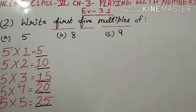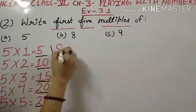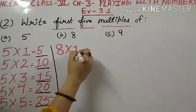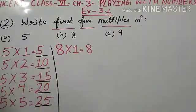Now, B part, B part is 8. Now we have to write multiples of 8. First 5. So, for the first multiple, what do we have to do? 8 multiplied by 1, 8 ones are 8.